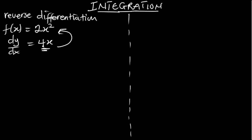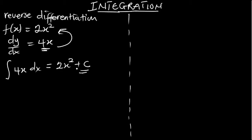So integration is just the reverse of differentiation. If I want to obtain the original expression back, I apply integration, which is denoted by the integral sign. For example, the integral of 4x with respect to x is going to give me back 2x squared, but plus a constant. We will explain further why we get this constant. In simple terms, when you integrate a function you get back the original equation which gave you the derivative.